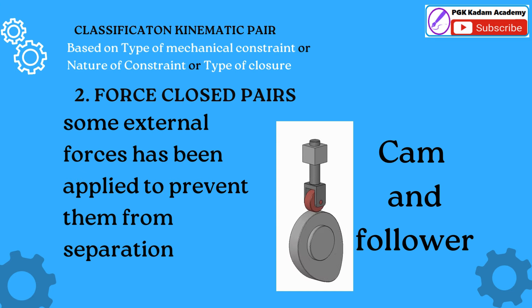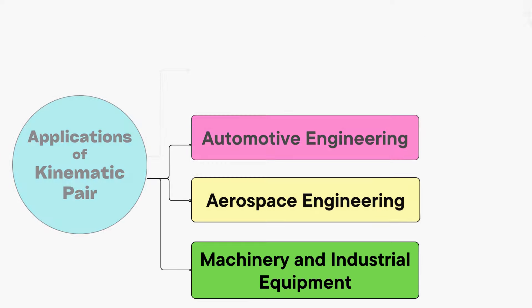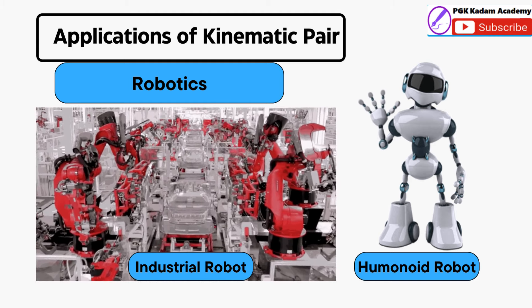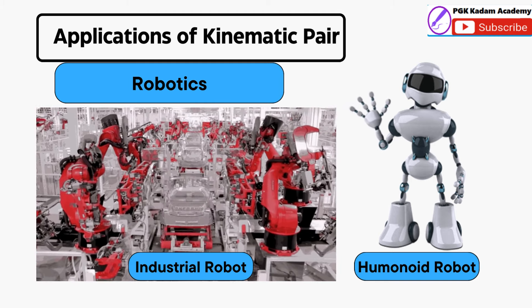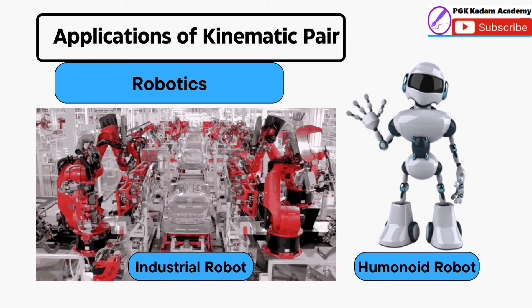Applications of Kinematic Pairs: Kinematic Pairs are fundamental components used in the design of various mechanical systems. They are essential for achieving desired motion and facilitating the relative motion between components. In Robotics, Kinematic Pairs are extensively used in the design of robot manipulators and robotic systems, enabling controlled and precise motion in various degrees of freedom.